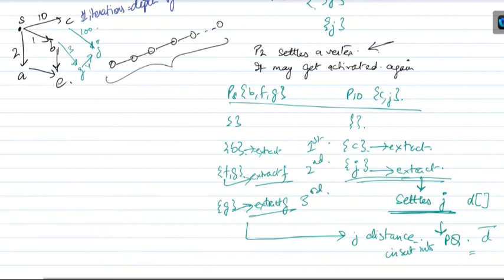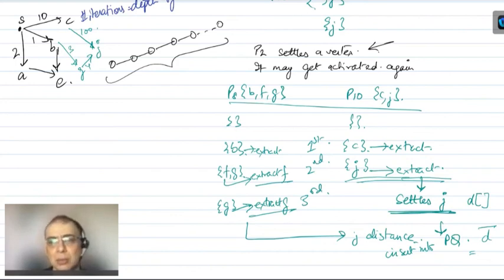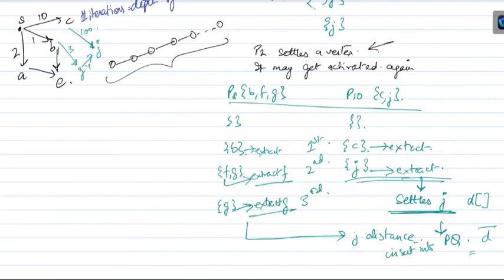If the distance found by P8 was greater than the distance that P10 settled at first, then we don't have to insert it back. If the new distance you get is more than the previous distance, you just drop it and forget about it. This re-activation only happens if you've discovered a shorter path.